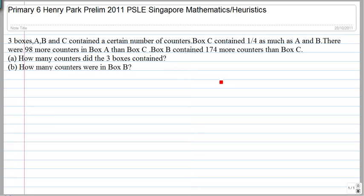All right, so this is the primary six question from Henry Park. There are three boxes A, B, and C, and these boxes contain a certain number of counters. What you know is box C was one quarter as much as box A and B.